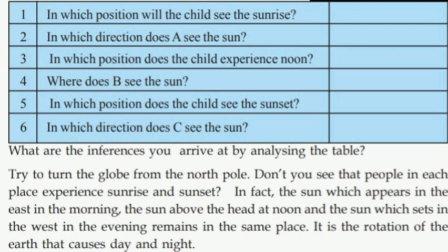Due to the rotation of the earth, we can see the sun in the east in the morning, in the west in the evening, and above the head at noon.